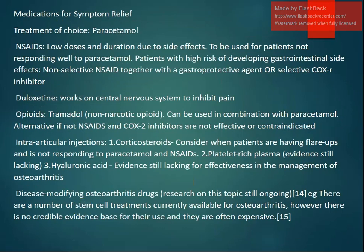Medications generally include paracetamol for pain and low-dose non-steroidal anti-inflammatory drugs. Duloxetine works in the CNS to inhibit pain; opioids such as tramadol may also be used. Intra-articular injections with corticosteroids are used during flare-ups when the patient is not responding to paracetamol and NSAIDs. Platelet-rich plasma and hyaluronic acid injections are also options, though research on their effectiveness is still ongoing. Disease-modifying osteoarthritic drugs and stem cell treatments are also under investigation.